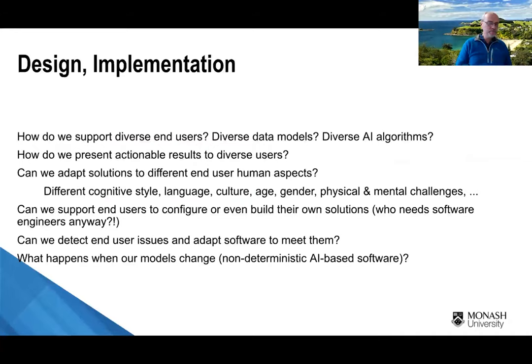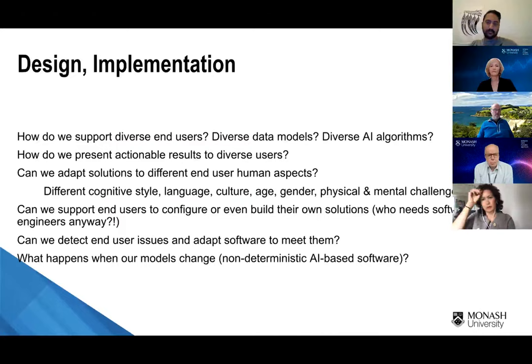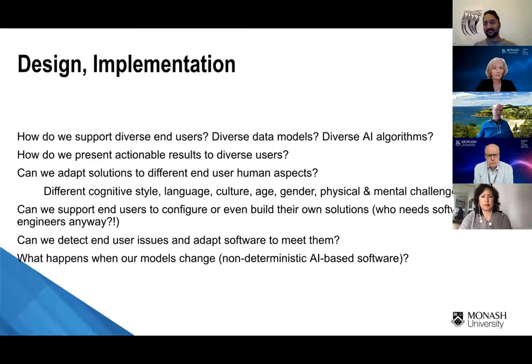I think this design and implementation level is really interesting. Do we need tools like the one I just showed you? Do we just get developers and data scientists out of the loop and let the users go at it? Or do we need ways to incorporate the non-deterministic nature of AI-based solutions and the non-deterministic nature of humans into this? Do we need to better support accessibility — language, culture, gender, challenges that users have — much better in design and implementation? Thoughts from the data scientists and AI folks?